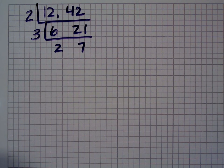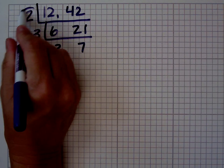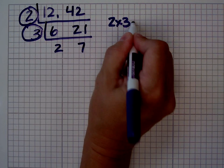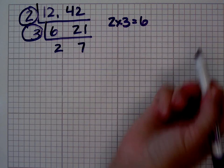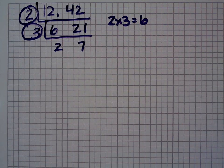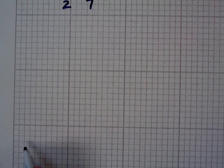Now I look at that two and seven and I say to myself, is there anything I can take out of both of those? Well, there's a one, but other than a one, is there anything I can take out? No. If that's the case, I take my numbers on the left-hand side, I multiply them together, and the greatest common factor of twelve and forty-two is six. I've done it in about a minute instead of about twenty minutes like it used to take. Let's try another one.